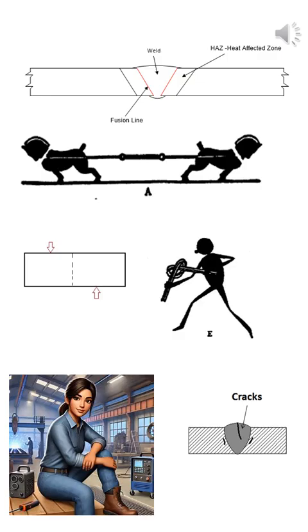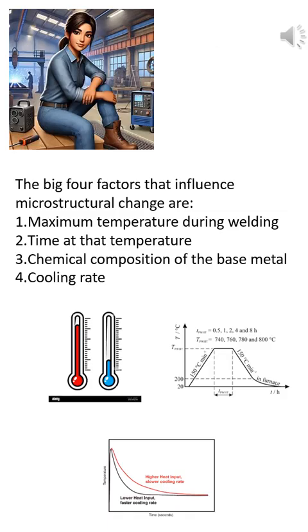Why this matters. So why should you care? Because the extent of microstructural change affects everything: strength, ductility, toughness, and crack resistance. The big four factors that influence microstructural change are: one, maximum temperature during welding; two, time at that temperature; three, chemical composition of the base metal; four, cooling rate.